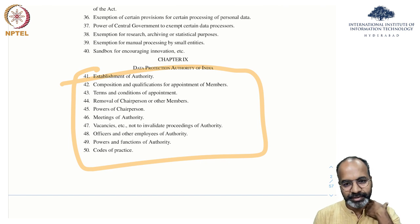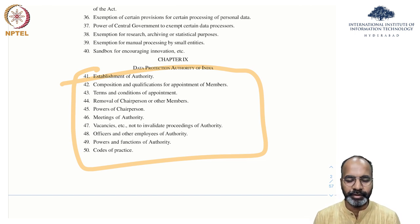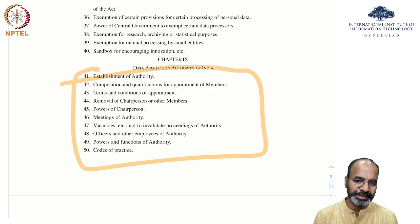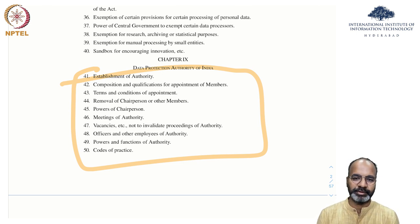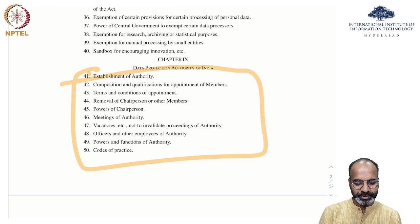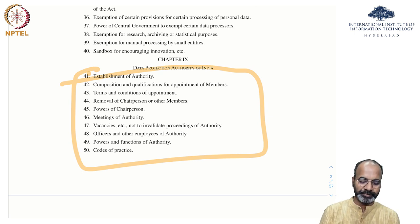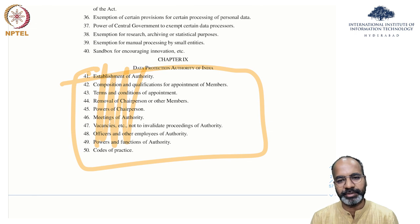One critical thing this bill proposes is setting up a Data Protection Authority of India. The bill details its role, mandate, who will be on the authority body, what they can and cannot do — including establishment of the authority, composition and qualifications, terms and conditions of appointment, removal of chairpersons, meetings, vacancies, offices, and code of practices. It goes into significant detail about how to set up the authority itself.